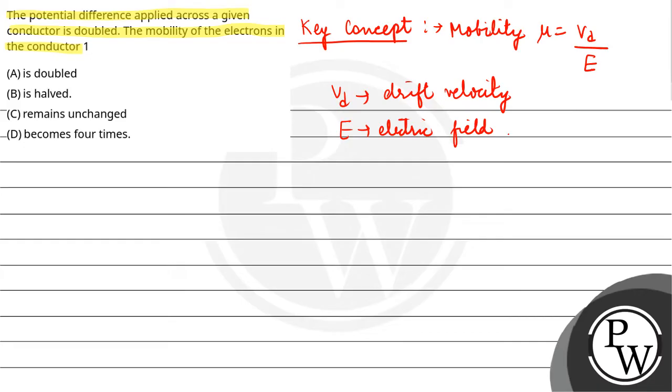Now, we have said that the potential difference is doubled. Mu is equal to VD upon E. So, we can write E as V upon L, the potential difference upon L. So, that is VD upon V.